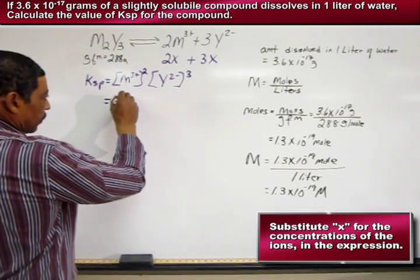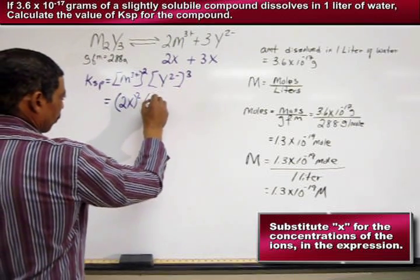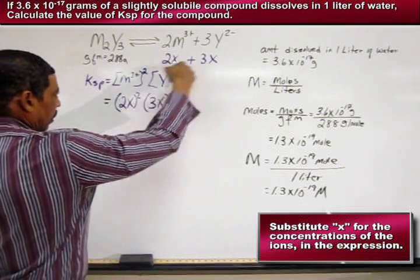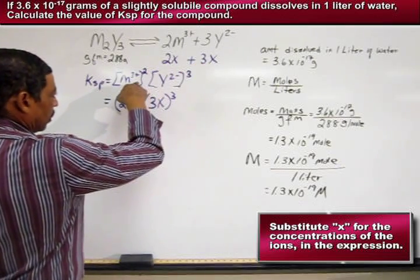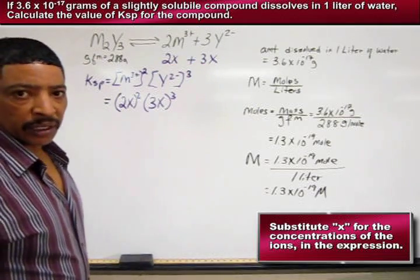The next step in determining KSP will be to substitute for M and Y the values of X. So in the first case, we place 2X squared. And in the second case, we place 3X cubed, simply being consistent with both the KSP expression and the actual ratio determined from the equilibrium equation.